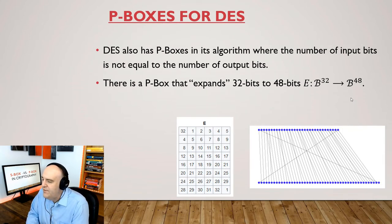But that doesn't have to be true in general. Here's another P-Box in DES, which has the input bits being less than the output bits. So we're taking 32-bit sequences and mapping them to 48-bit sequences. So it's kind of an expanding P-Box because we're going from a smaller number of bits to a larger number of bits. And here's the table and the diagram that represents that.